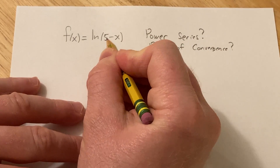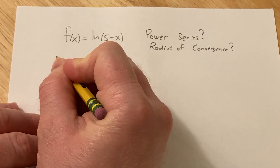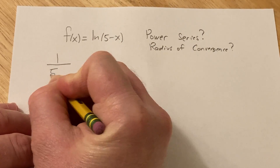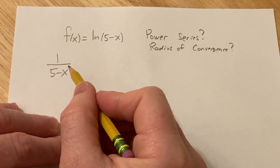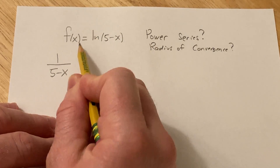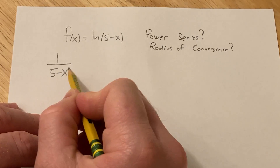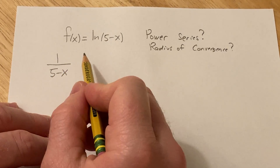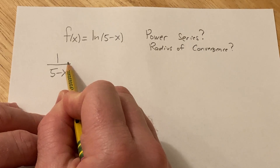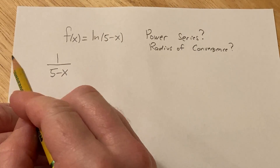We're going to start with another function. If you look at 1 over 5 minus x and integrate this, you get negative ln(5 minus x). So the integral of this is almost this. What we're going to do is find the power series for 1/(5-x) and then integrate it to come up with ln(5-x).